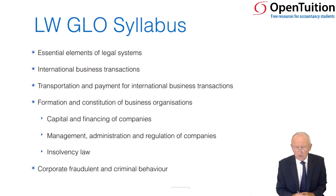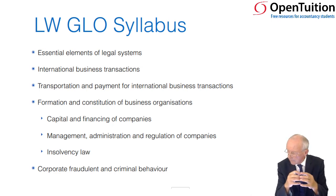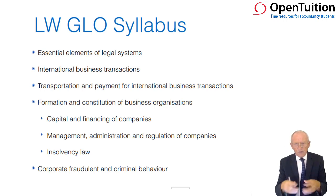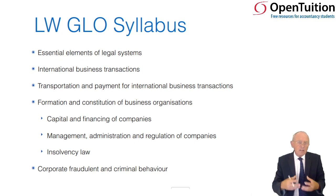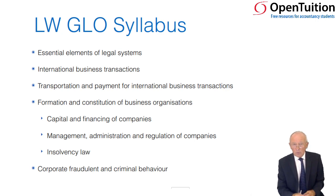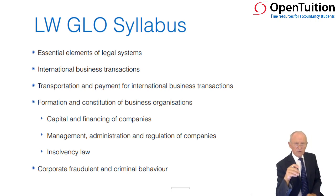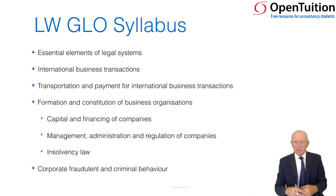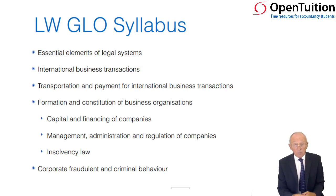We're also looking at alternative dispute resolution — arbitration — where instead of taking a dispute to court, the two parties can agree to subject themselves to arbitration and get an independent arbitrator to consider the facts and make a decision as to who is right and how much compensation should be awarded. So that covers international business transactions. Then we come to transportation and payment for international business transactions, with a lot of paperwork involved — letters of credit, bills of lading, and so on.